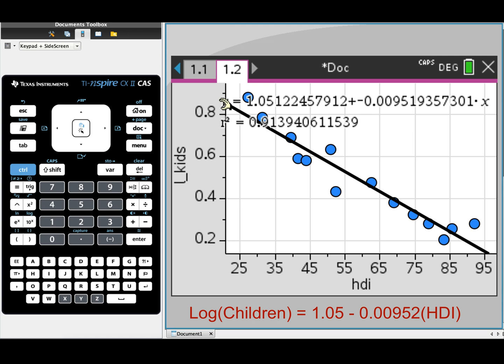The other thing to do with this is change the x and the y variables to use the actual words from the question. So we would have children or kids and hdi instead of x. That way, when we use this equation to make predictions in the future, it's easier for us to know what we are solving for.